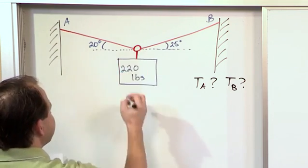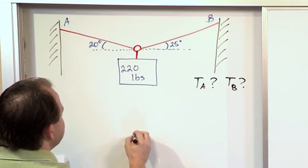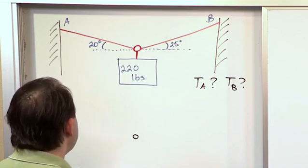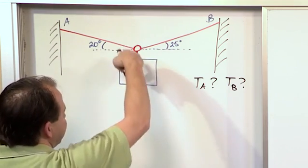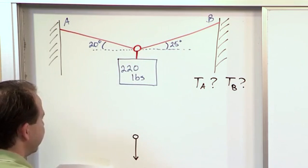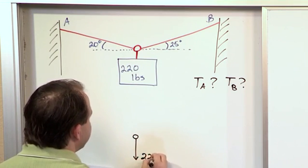So let's represent this little ring as we can draw it as a ring if we want. That's no problem. You can fill it in as a circle. But anyhow, we know that there's a force acting straight down on this guy because that's the weight. So we simply draw that as an arrow and we write that that's 220 pounds.